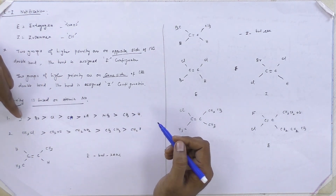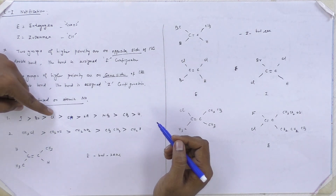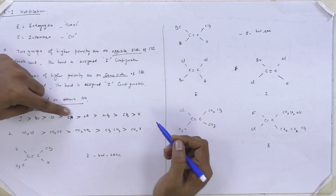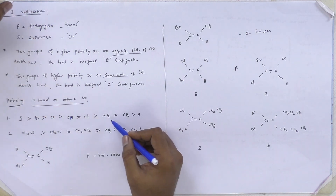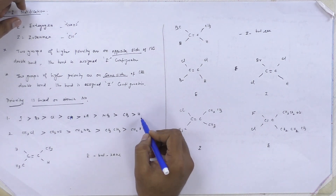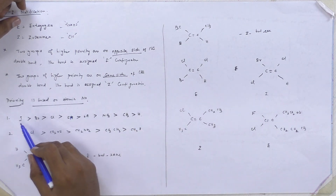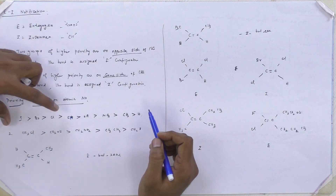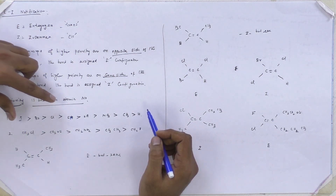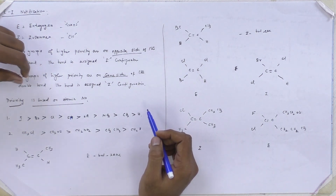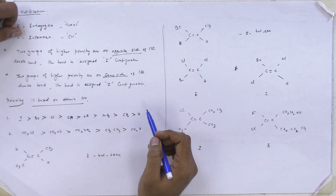Iodine has the highest atomic number, then bromine, chlorine, SH, OH, NH2, CH3, and H. So hydrogen has the least atomic number and iodine is highest. This is the given priority order of compounds.